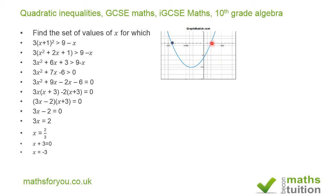From the graph, all points beyond or greater than x = 2/3 give positive y-values, and all points less than x = -3 also give positive y-values. To check: between x = 2/3 and x = -3, try x = 0. Substituting x = 0 gives minus 6, so the y-value is minus 6 — below the x-axis and not positive.